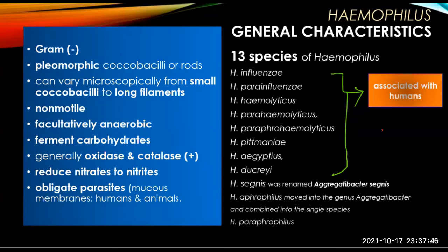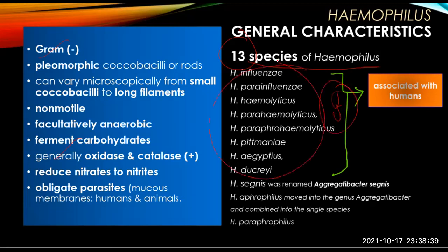The genus Haemophilus consists of gram-negative, pleomorphic coccobacilli or rods that can vary microscopically from small coccobacilli in direct smears of clinical material to long filaments occasionally seen in stained smears of colony growth. They are non-motile and facultatively anaerobic. They ferment carbohydrates and are generally oxidase and catalase positive and capable of reducing nitrates to nitrites. They are obligate parasites on the mucous membranes of humans and animals. There are approximately 13 species of Haemophilus, eight of which are associated with humans.